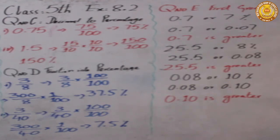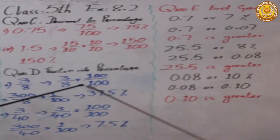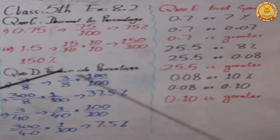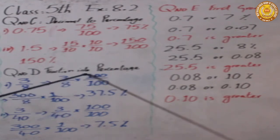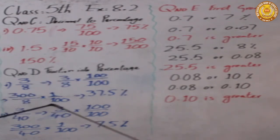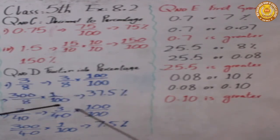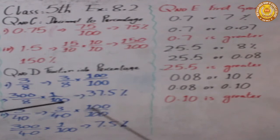To convert any fraction to percentage, we multiply it by 100 over 100. So 3 over 8 multiplied by 100 gives us 300 over 8. Dividing 300 by 8, we get 37.5. So the answer is 37.5%.